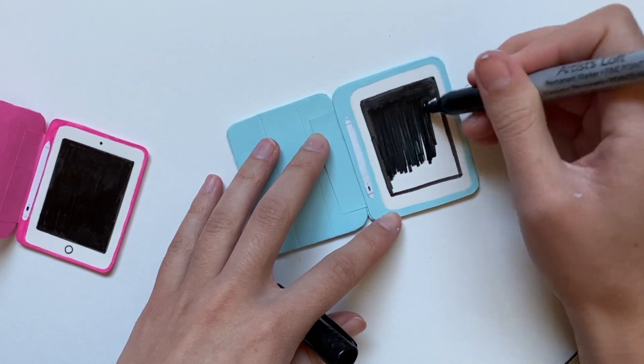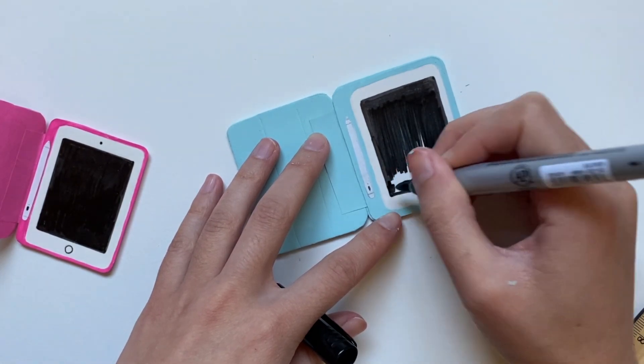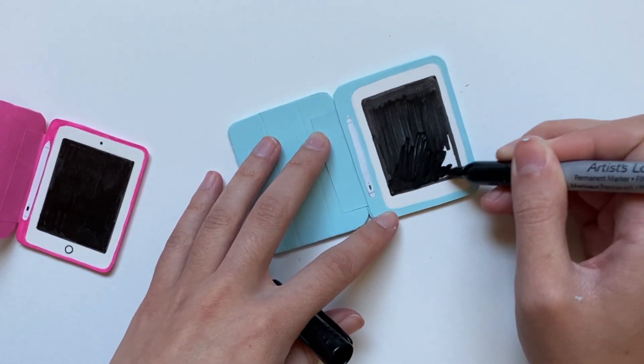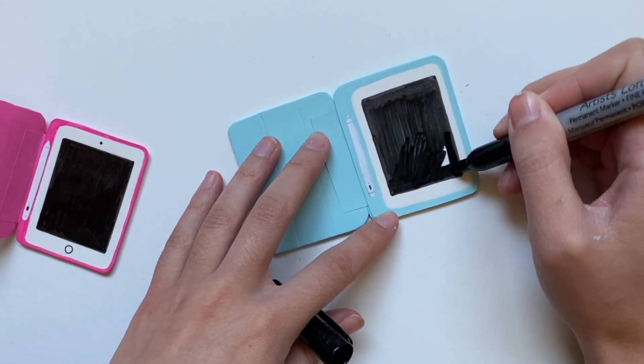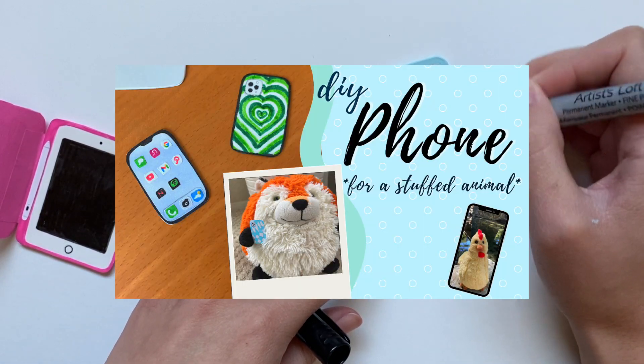But I'm going to just color in this entire thing with sharpie because that's what I did for the first one, and I feel like it gives it still a nice shine. But you can always just use paint or black paper if you don't want it to look off all the time. You could always watch my how to make an iPhone for a stuffed animal video because there I added the background and all the little apps, which you could do the same thing for here.